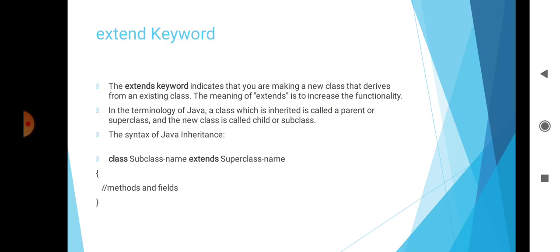The extend keyword indicates that you are making a new class that derives from an existing class. The meaning of extends is to increase functionality. In Java terminology, the class which is inherited is called the parent or superclass, and the new class is called the child or subclass. To inherit a class, we incorporate the definitions of one class into another using the extend keyword.